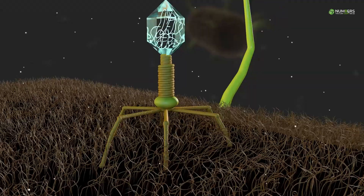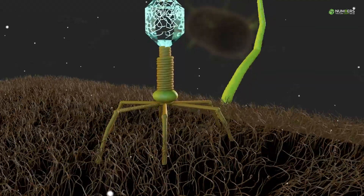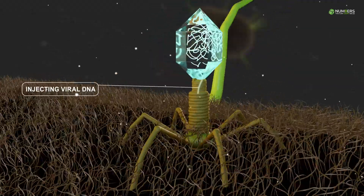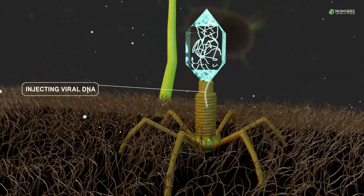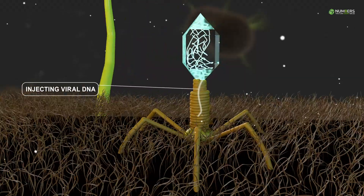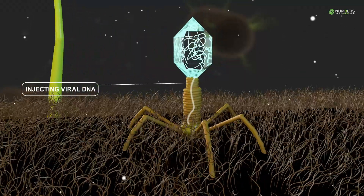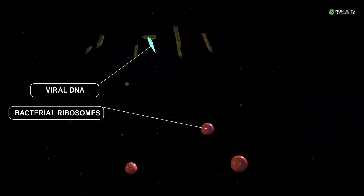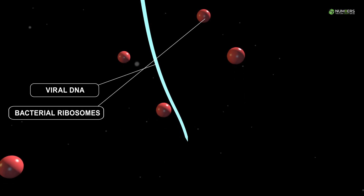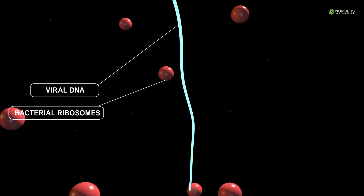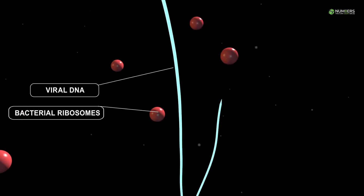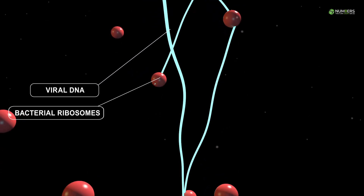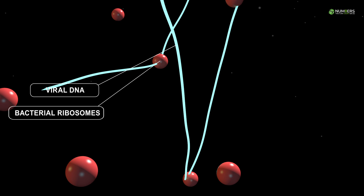With remarkable precision, the bacteriophage injects its genetic material — the DNA — into the bacterial cell. Once inside, the bacteriophage DNA takes command, hijacking the bacterial machinery to replicate its own genetic code.